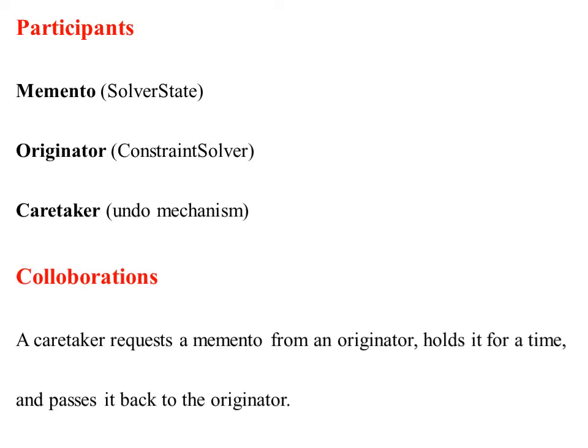In collaboration, a Caretaker requests a Memento from an Originator, holds it for a time, and passes it back to the Originator. The Caretaker requests an undo mechanism to the Memento from an Originator. The Originator determines what needs to be solved, holds it for a time, and passes it back. Then restoring is done by the Memento, while the Caretaker performs the undo mechanism.